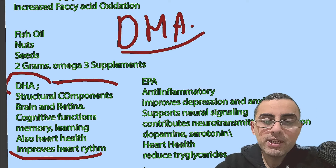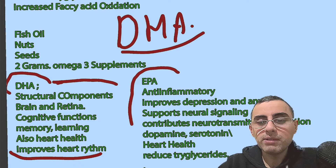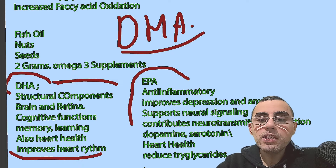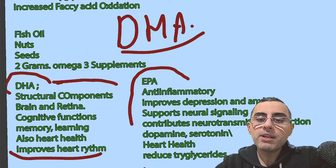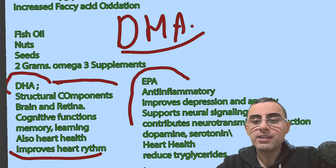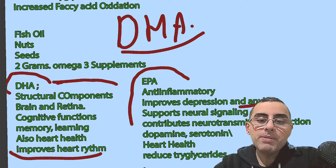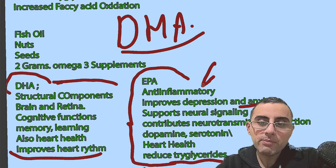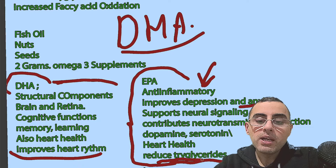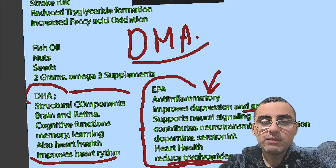EPA is also important. EPA is anti-inflammatory and is important for the production of dopamine and serotonin, giving it an antidepressant and anti-anxiety effect. EPA also promotes heart health because it decreases inflammation, and it also decreases the production of triglycerides.